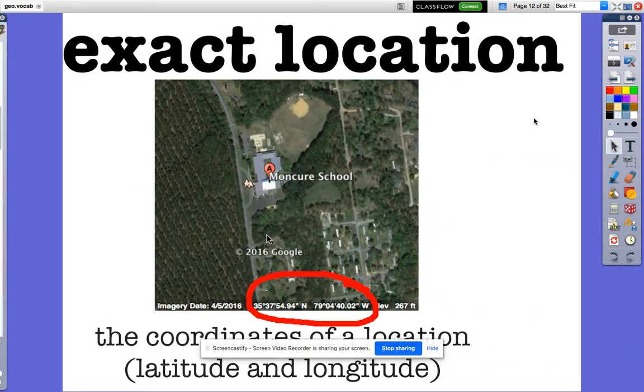Exact location. Exact location is the actual coordinates of a location. It can be longitude and latitude. It can be the actual address of that location. Here we can see the actual coordinates for Moncure School: 35 degrees 37 minutes north and 79 degrees 4 minutes west. Those are the exact coordinates for Moncure School.